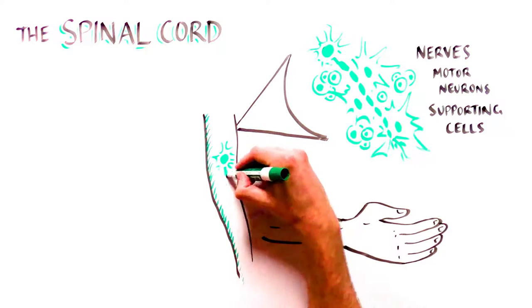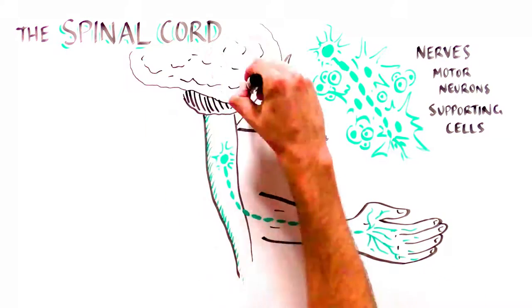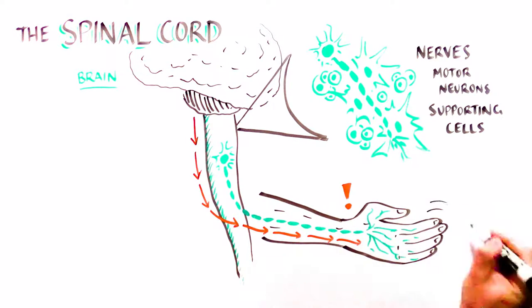Nerves connect our brains to our bodies by carrying sensory and motor signals from the brain down the spinal cord and to the muscles throughout the body.